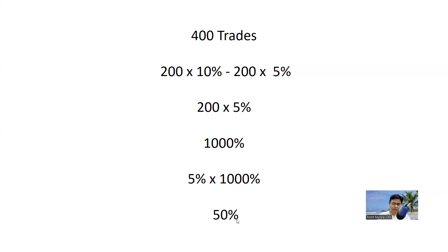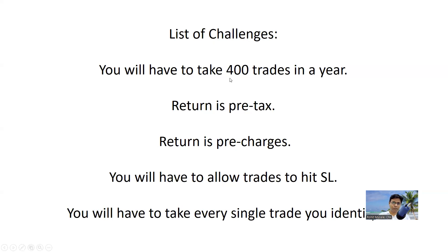When I present this mathematics, it sounds very simple, but in reality it is not as simple as it looks. There are a lot of challenges you will have to face to implement this system. I want to discuss 10 of those challenges. Number one: you will have to take 400 trades in a year. Whatever system you are using — a pullback trading system or a breakout trading system — you will have to take 400 trades in a year to hit that return target.